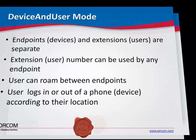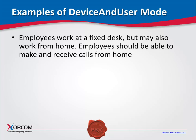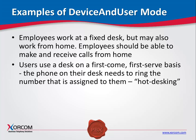Here are some examples of endpoints for which device and user mode should be defined. Number one, for employees that work at a fixed desk in different locations, such as in the office and at home — this mode allows them to make and receive calls from both locations in an identical manner. Number two, for salespeople who man a hot desk, where the phone device is available on a first-come, first-served basis. The available telephone device is assigned to the specific employee extension when he or she logs in.